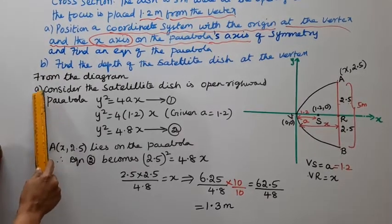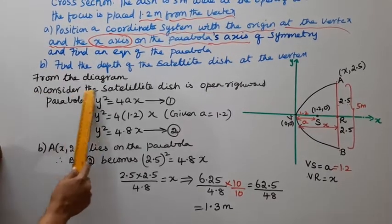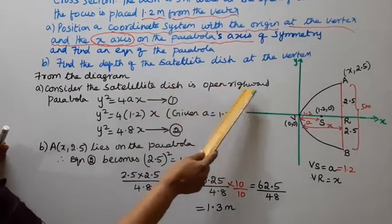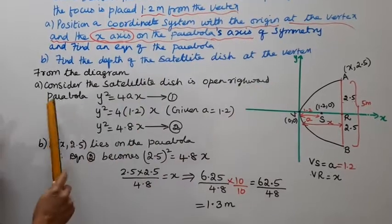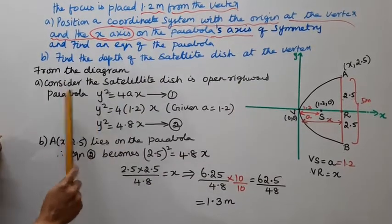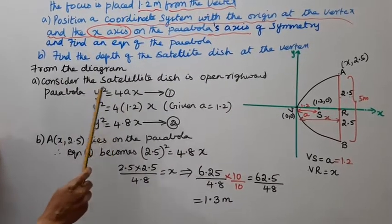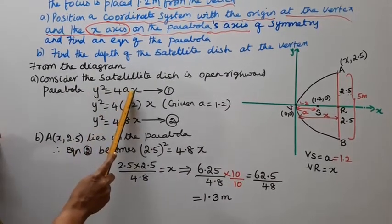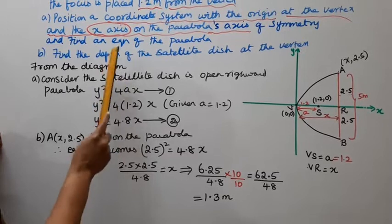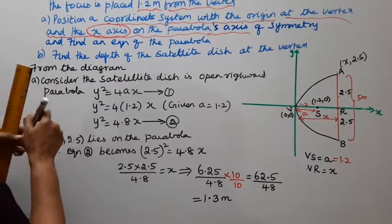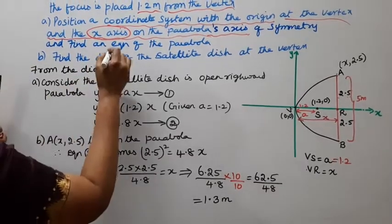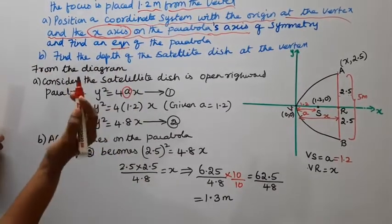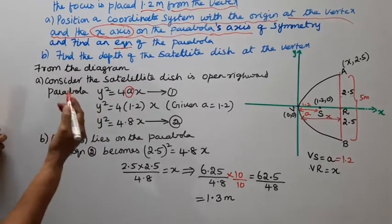Consider the satellite dish's open rightward parabola. That's the standard form: y² is equal to 4ax. The equation of the parabola is y² = 4ax, where a is the known value.